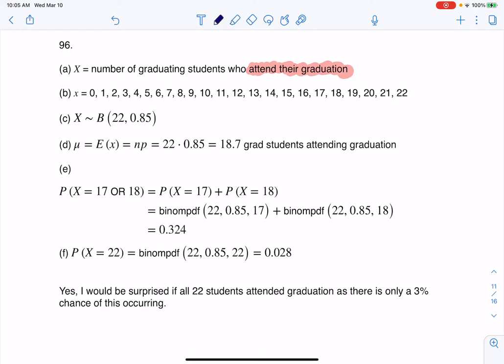So anyways, the variable here, if we're talking to 22 folks, that means that I'm going to keep track of the number of students who actually go to their graduation.